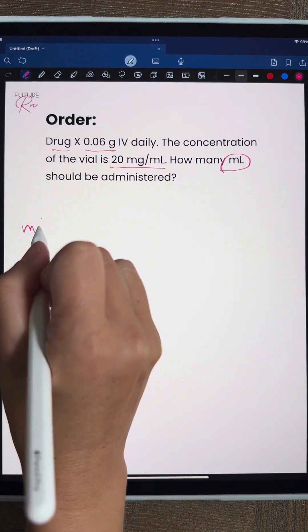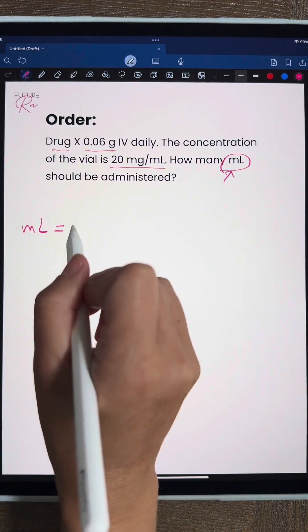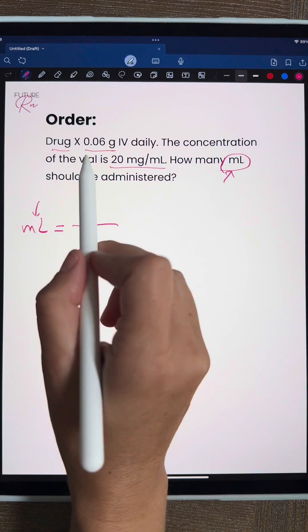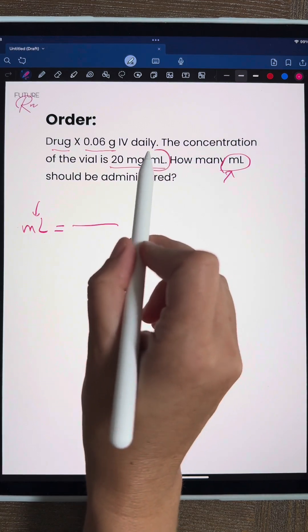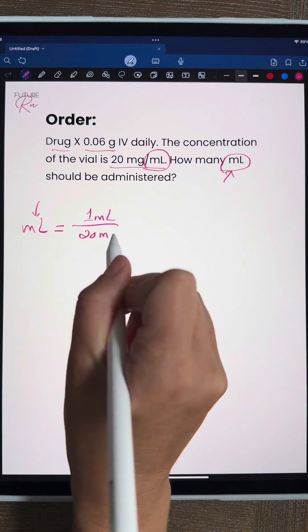So our milliliter is going to be on the left of our equal sign because that's what we are looking for at the end of our problem. Our numerator we want to match this milliliter. So if we look back in our problem, what we have in our milliliters is a 20 milligram concentration. So we have our 1 mL and 20 milligrams.